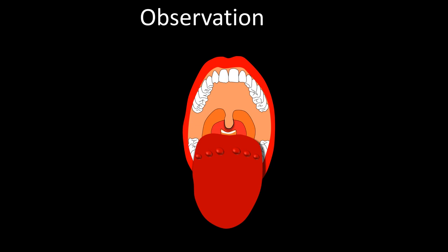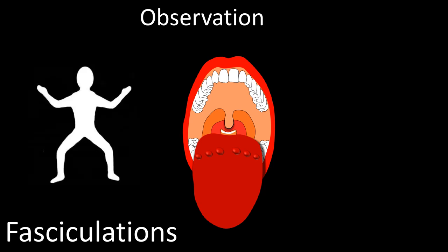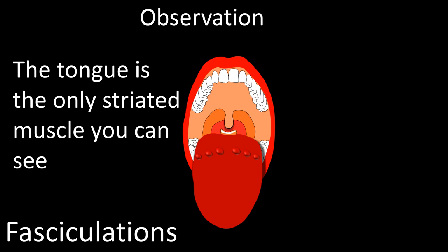I like to start by looking at the tongue, primarily searching for fasciculations. Tongue fasciculations reflect lower motor neuron involvement, specifically of the hypoglossal nucleus. Fasciculations can occur all over the body, but a good place to start is the tongue because it is the only striated muscle not covered by skin — hence the only striated muscle we can normally see.